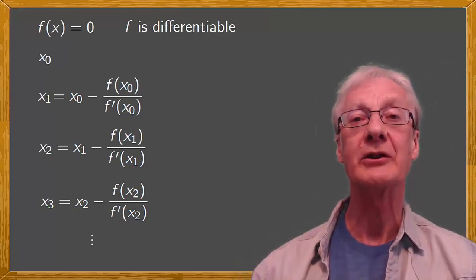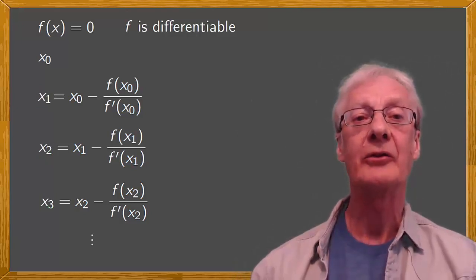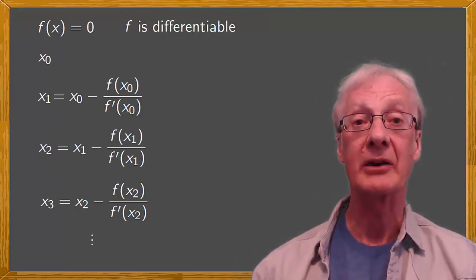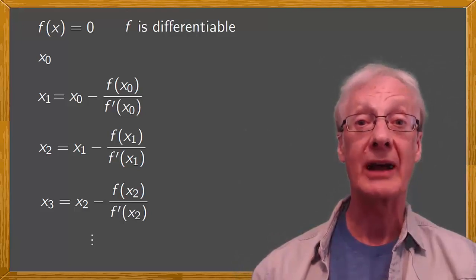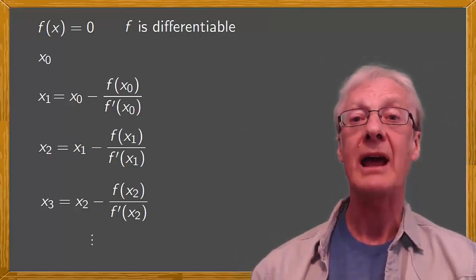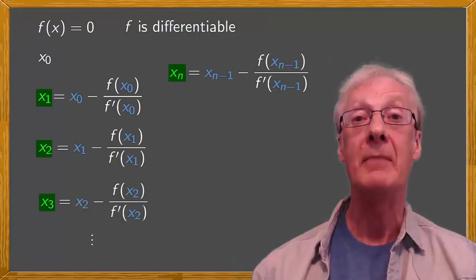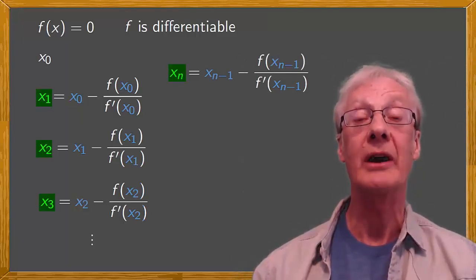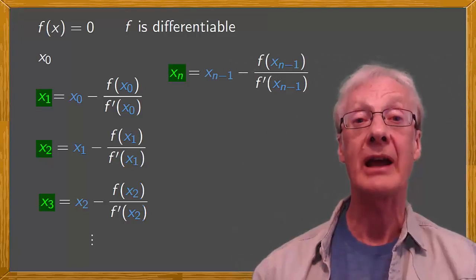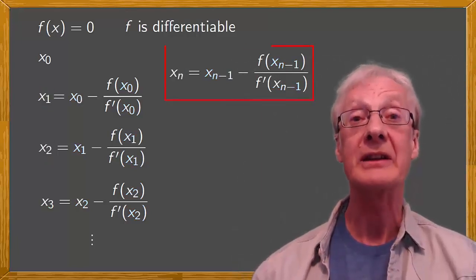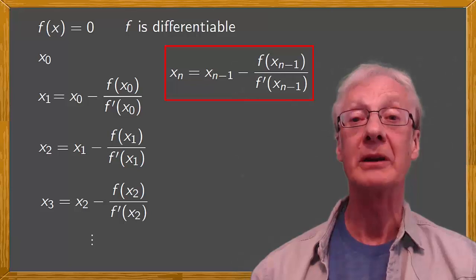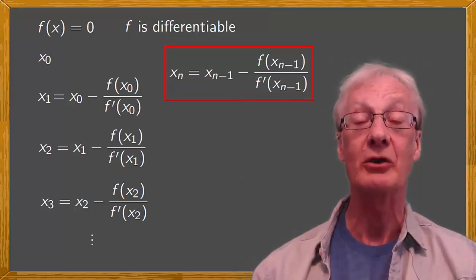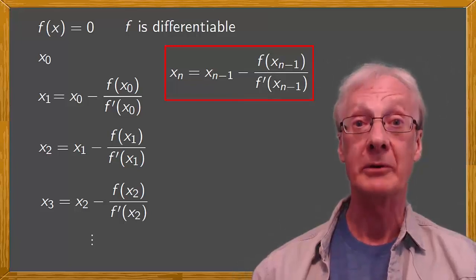xn equals xn minus 1 minus f of xn minus 1 over f prime of xn minus 1. And this is the general formula that allows us to obtain the value of each approximation or iteration from the previous one.